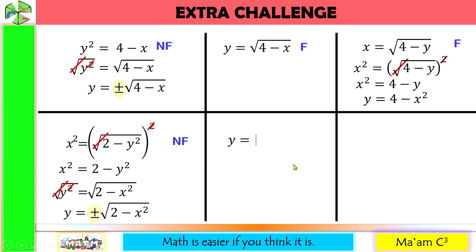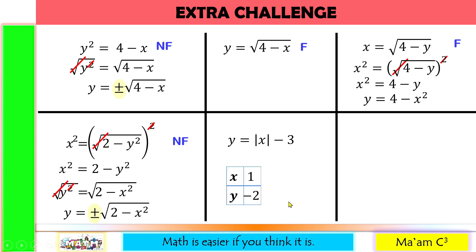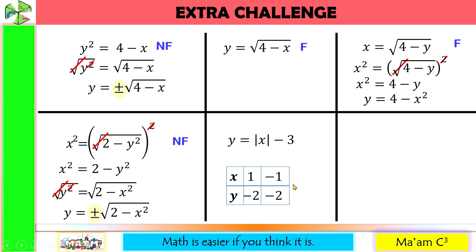Let's have another one: y is equal to the absolute value of x minus 3. The absolute value function makes any value substituted here positive. Trying x equals 1: the absolute value of 1 is 1, and 1 minus 3 is negative 2. Trying x equals negative 1: the absolute value of negative 1 is still 1, and 1 minus 3 is negative 2. For the table of values, no x value is repeated. Therefore, this equation is a function.